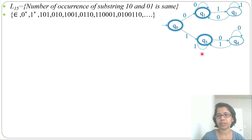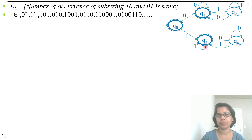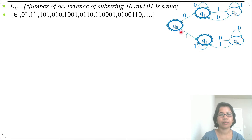At q4 we make a self-loop on 0. If you remember, this DFA is similar to the one for strings starting and ending with the same symbol — those had two final states, but here we added the initial state as a final state too, giving three final states. So this DFA is the same as 'starting and ending with same symbol' plus epsilon.